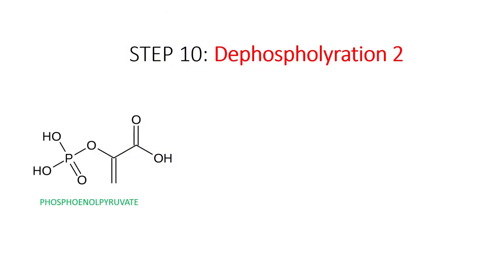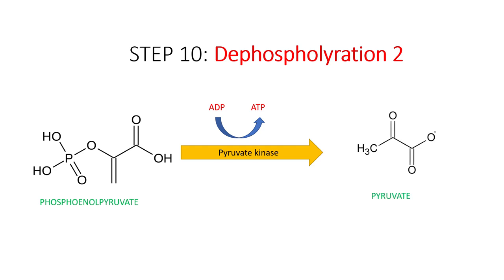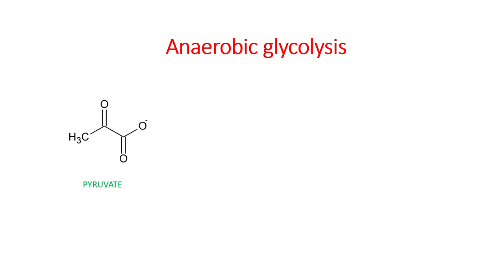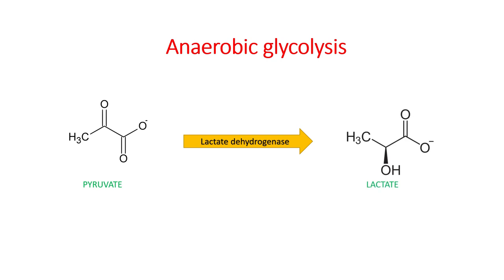In the final 10th step of glycolysis, enzyme pyruvate kinase catalyzes the conversion of phosphoenolpyruvate into pyruvate, and we gain another ATP molecule. However, if conditions are anaerobic, pyruvate becomes lactate in a reaction catalyzed by lactate dehydrogenase. The purpose of this reaction is to recycle NAD+ so it can be used again in the next cycle of glycolysis.